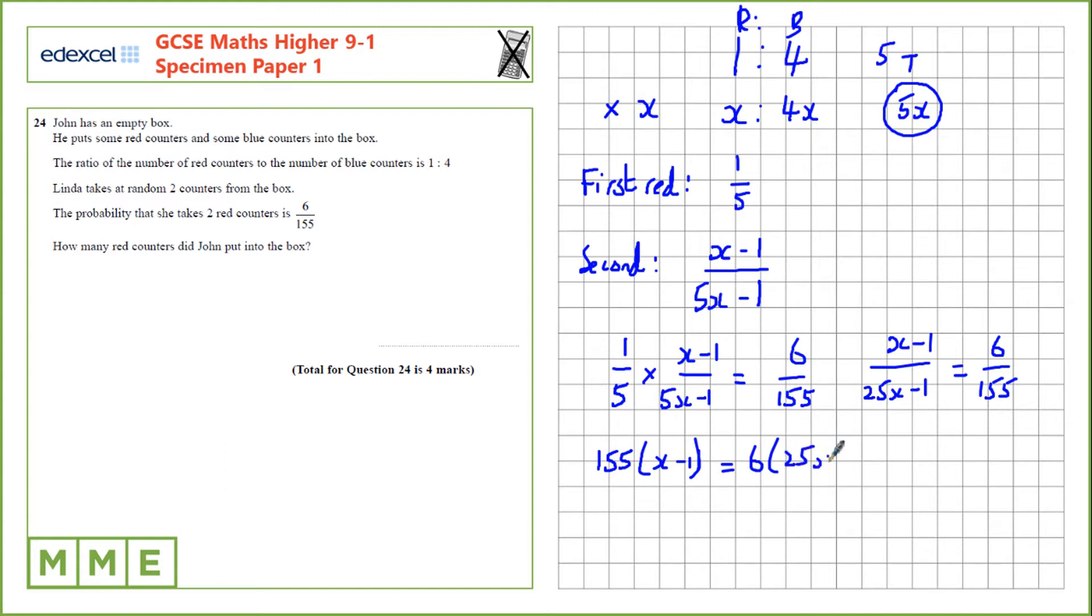Now, let's expand. That gives us 155x minus 155 is 6 times 25x, which is 150x, minus 6.